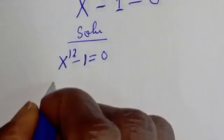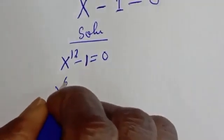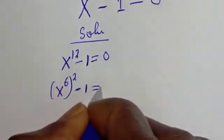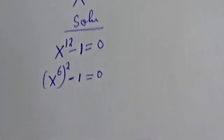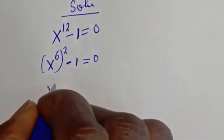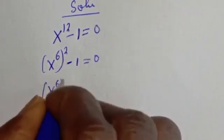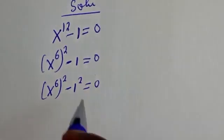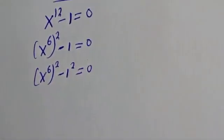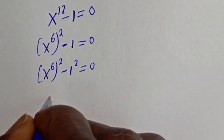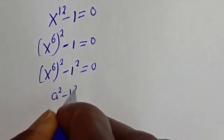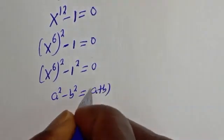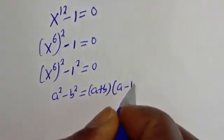s raised to power 12 can be written as s raised to power 6, squared, minus 1 is equal to 0. This is the same thing as s raised to power 6 squared minus 1 squared is equal to 0. If you look at this, this is in the form of a perfect square difference. If you have a squared minus b squared, this is equal to (a + b)(a - b).